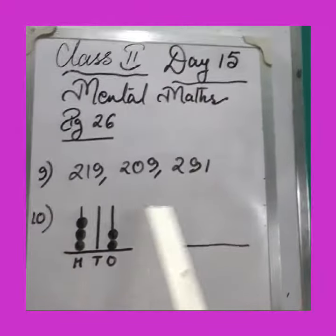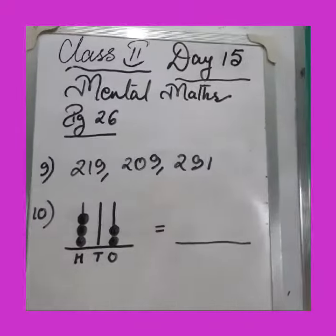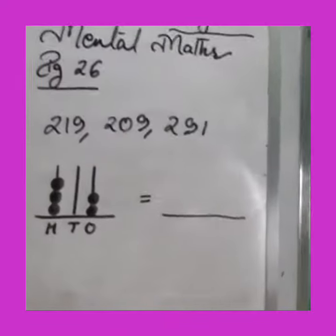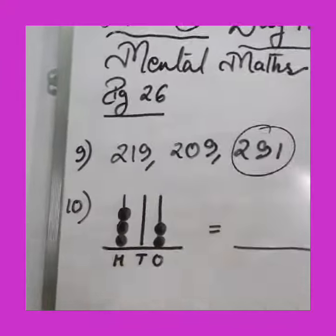Last two sums. 219, 209, 291. Which one is the biggest? Circle the biggest number. It is 291.